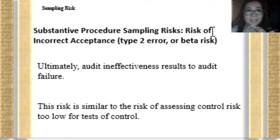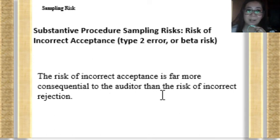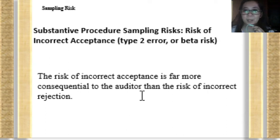Ultimately, audit ineffectiveness will result in true audit failure because, since the auditor relied on the fairness of the financial statements when in fact they are materially misstated, he will provide an inappropriate audit opinion. This risk is similar to the risk of assessing control risk too low for the test of control — and is considered to be a heavier risk. The risk of incorrect acceptance is far more consequential than the risk of incorrect rejection.